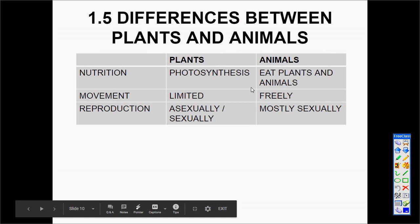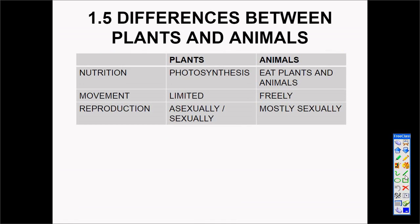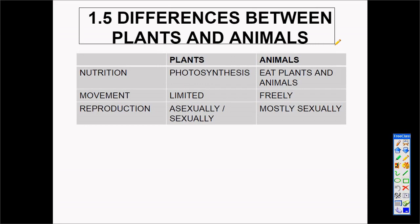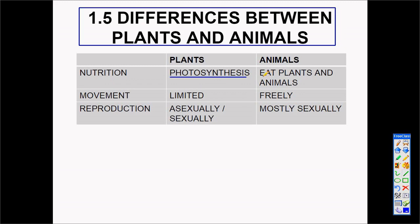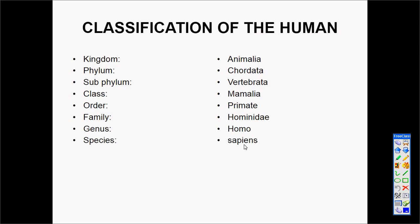The differences between animals and plants: In terms of nutrition, plants use photosynthesis – the most important process on Earth – to produce their own food and oxygen, while animals eat plants and other animals and cannot produce their own food. In terms of movement, plants are limited while animals move freely. Reproduction in plants can be asexual or sexual, while in animals it is mostly sexual. We also look at the classification of humans in terms of kingdom, phylum, and other categories.